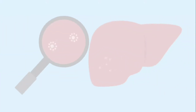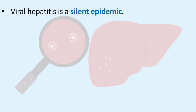An epidemic is the rapid spread of disease to a large number of people in a given population within a short period of time. Examples of some epidemics are the Black Death due to bubonic plague, Spanish flu due to influenza A H1N1, the HIV-AIDS pandemic, and the currently ongoing COVID-19 pandemic.